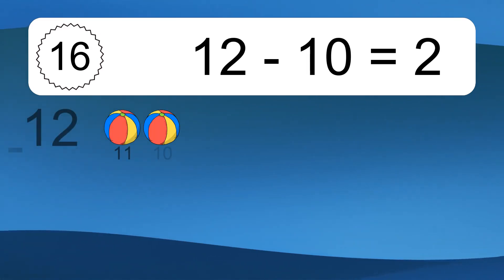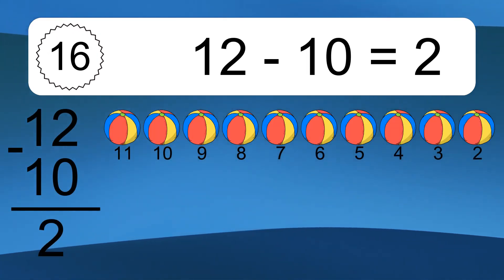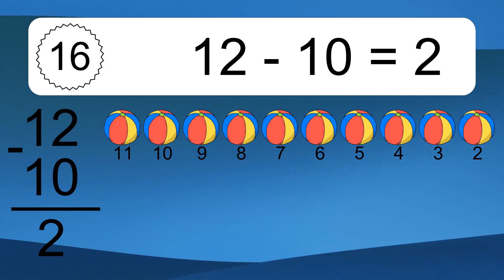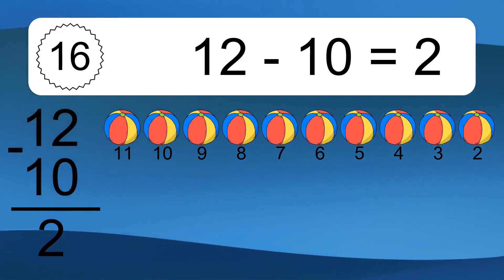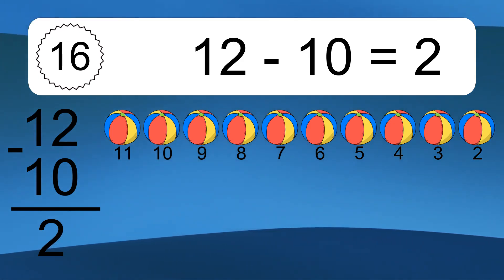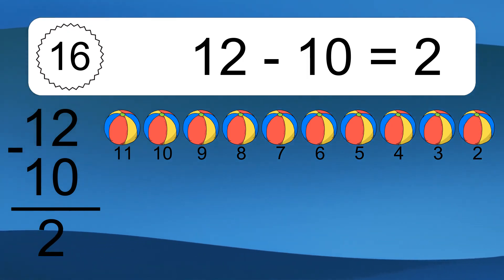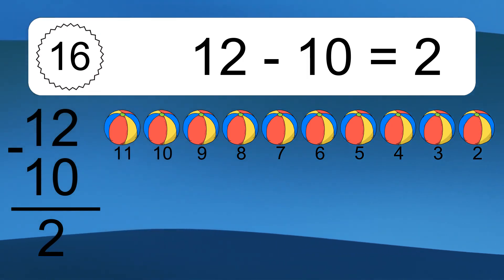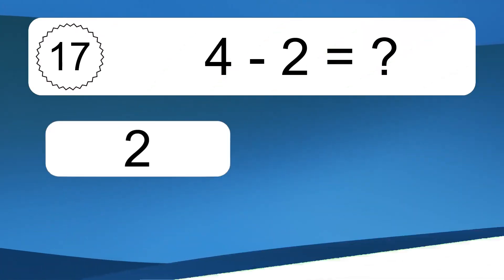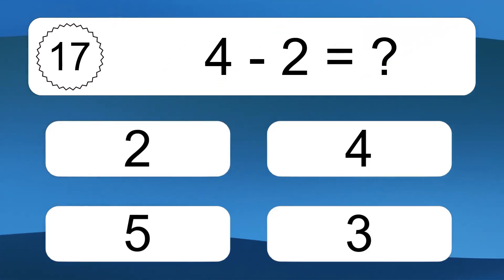12 minus 10 equals what? 12 minus 10 equals 2. Let's count it. 11, 10, 9, 8, 7, 6, 5, 4, 3, 2.